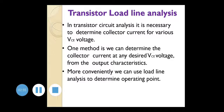In transistor circuit analysis, it is necessary to determine the collector current for various VCE voltages. This is considered in terms of common emitter configuration. One method is to determine the collector current at any desired voltage from the output characteristic. More conveniently, we can use load line analysis to determine the operating point. There is a very important term — the load line — and the operating point, which is called the Q point. From that you will get the proper biasing voltage so that proper amplification of the transistor takes place.